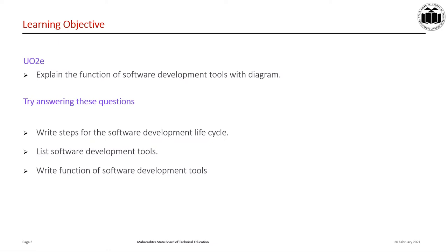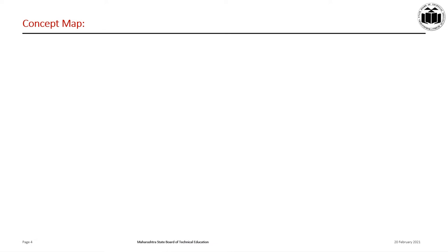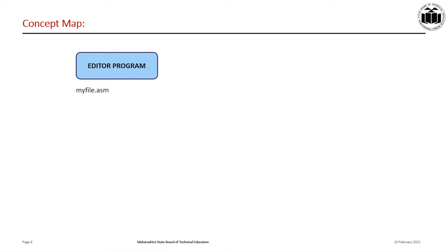Steps to create an executable assembly language program are as follows. First, we use an editor to type the program. Many excellent editors are available that can be used to create and edit the program. The editor produces a source file with extension name .src or .asm, depending on which assembler we are using.